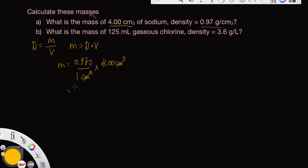And what do we get on our calculator? 0.97 times 4, I get 3.88.